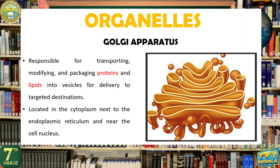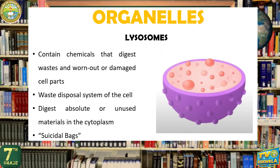Another organelle is the Golgi apparatus. It is responsible for transporting, modifying, and packaging proteins and lipids into vesicles for delivery to targeted destinations. It is located in the cytoplasm, next to the endoplasmic reticulum, and near the cell nucleus. While many types of cells contain only one or several Golgi apparatus, plant cells can contain hundreds. Did you know that cells also produce wastes? Structures called lysosomes contain chemicals that digest waste and worn-out or damaged cell parts. Lysosomes act as the waste disposal system of the cell by digesting obsolete or unused materials in the cytoplasm. Thus, lysosomes are also called the suicidal bags of the cell.